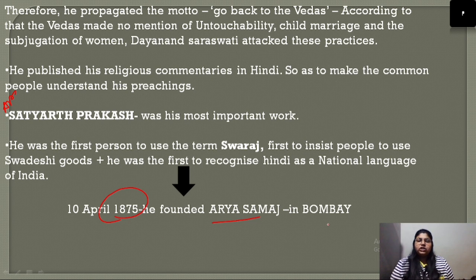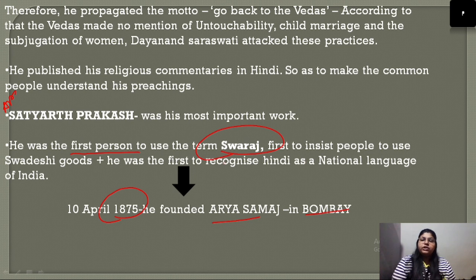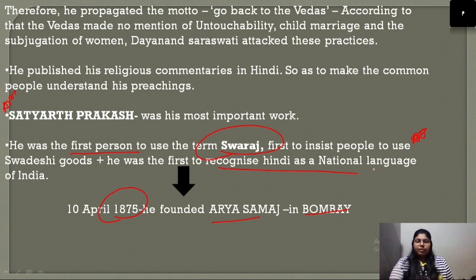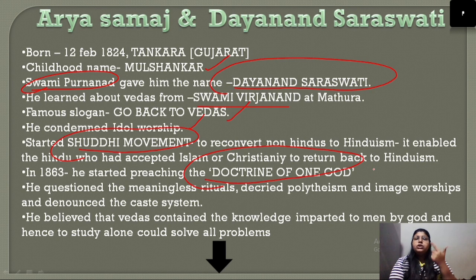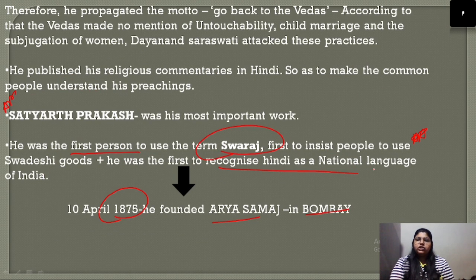In 1875, Dayanand Saraswati established the Arya Samaj in Bombay. He was the first person to use the term 'Swaraj,' the first to insist people use Swadeshi goods, and the first to recognize Hindi as the national language of India. To summarize: his childhood name was Mool Shankar, Swami Purnanand gave him the name Dayanand Saraswati, Swami Virjanand was his guru, and Satyarth Prakash was his famous work.